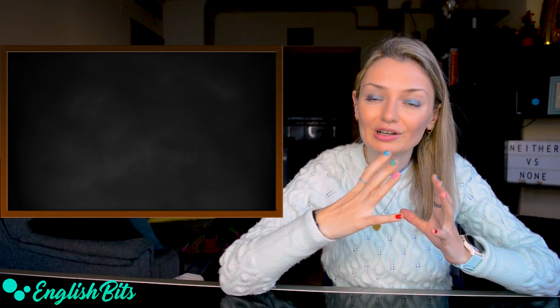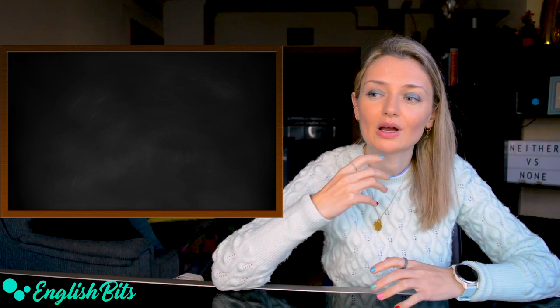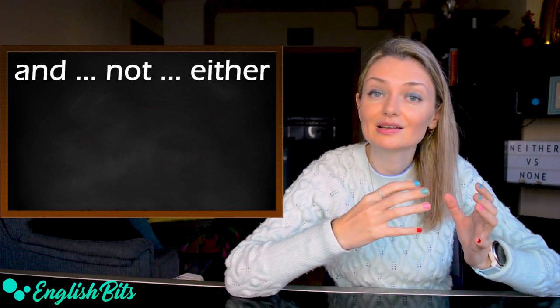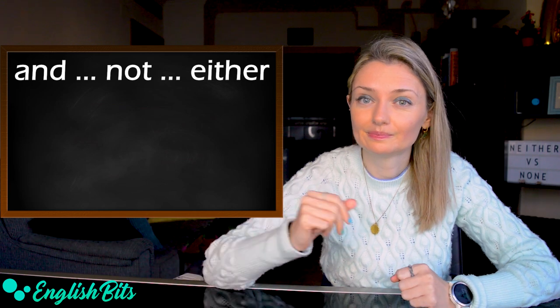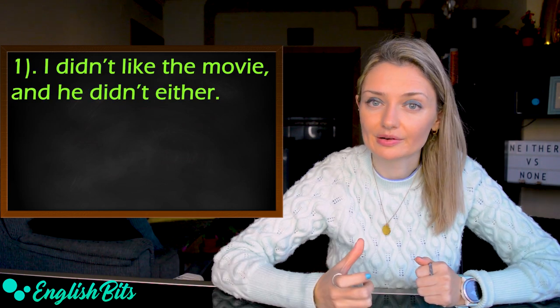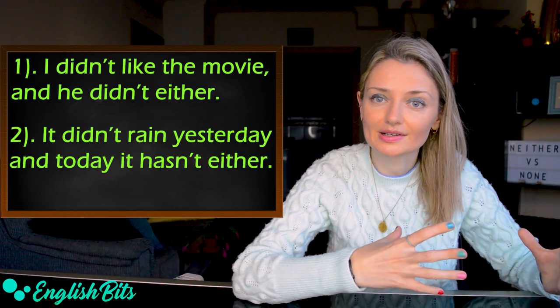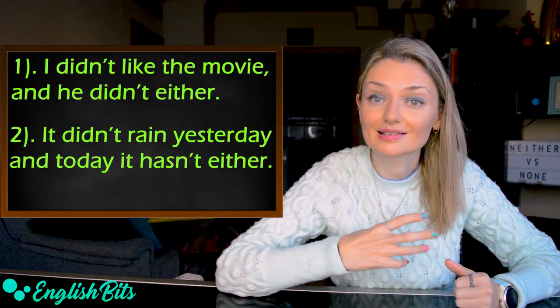This structure, neither nor, is a bit formal. And if you want to sound more informal, you can say and not either. Two examples: I didn't like the movie and he didn't either. And the last example here: it didn't rain yesterday and today it hasn't either.